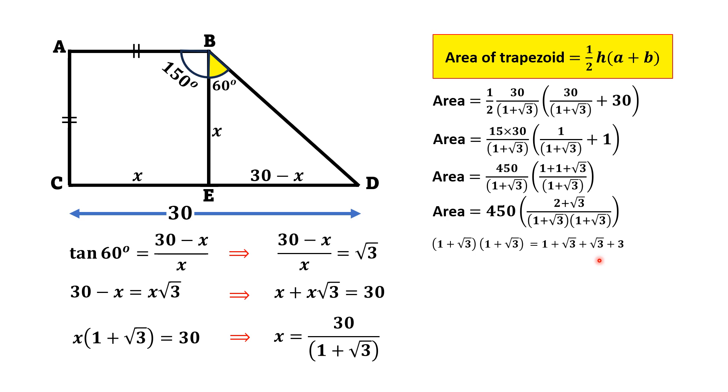we will get (1 + √3)(1 + √3) = 1 + √3 + √3 + 3, which equals 4 + 2√3. After simplification, if we take 2 common from this, we will get 2(2 + √3). So substituting this value, area of trapezium will be 450(2 + √3) over 2(2 + √3).